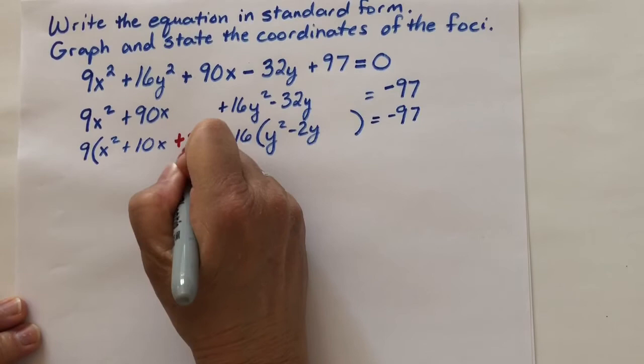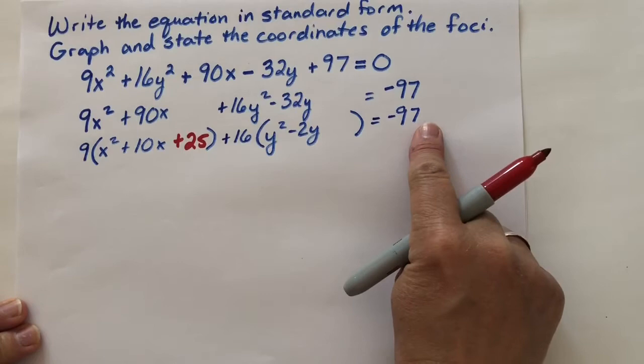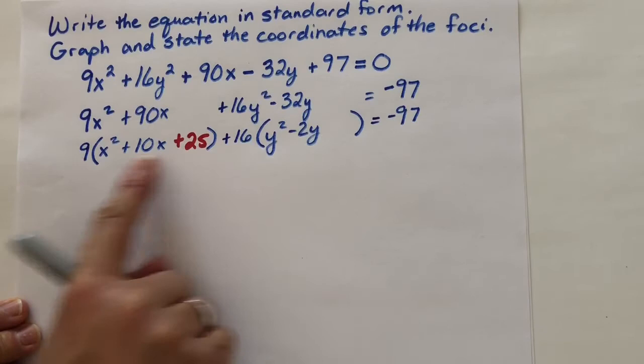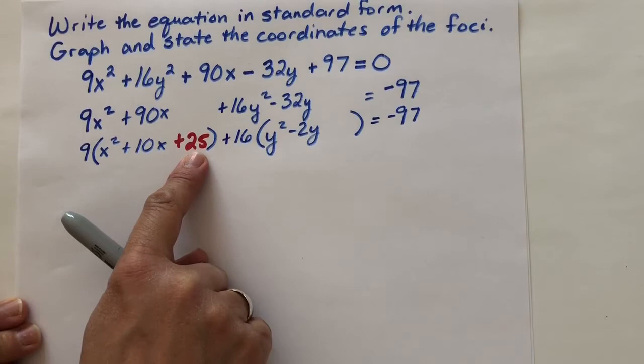And of course, to balance the fact that we added this number to the left-hand side, we need to add the same number to the right side. But notice this is not really a 25. It's 25 that's being multiplied by 9. So that's actually 9 × 25, which is 225. So we need to add 225 to the right side as well.